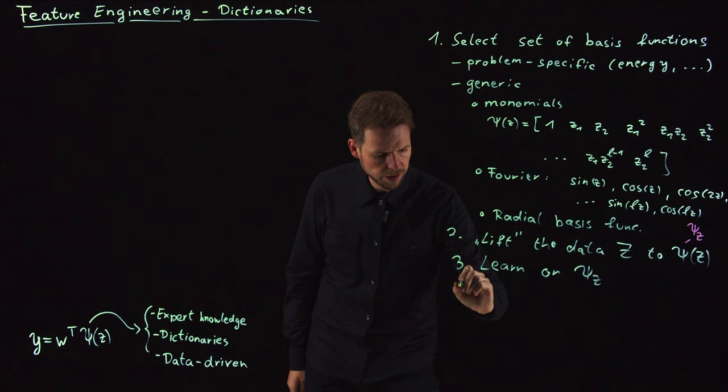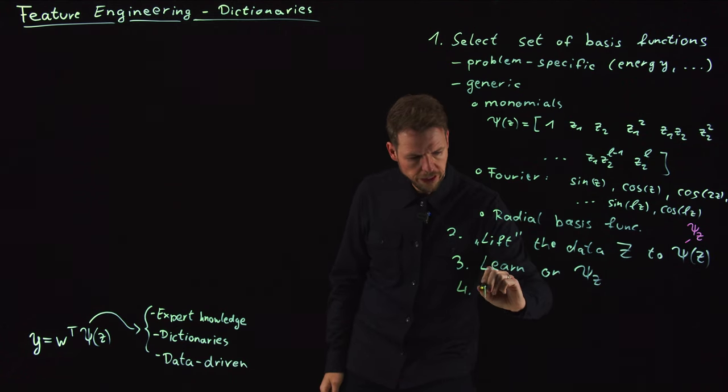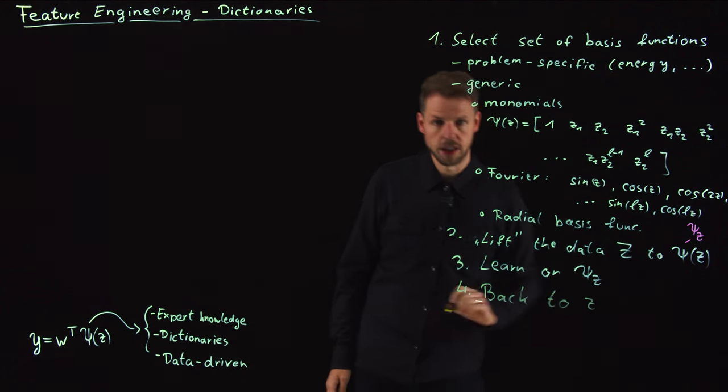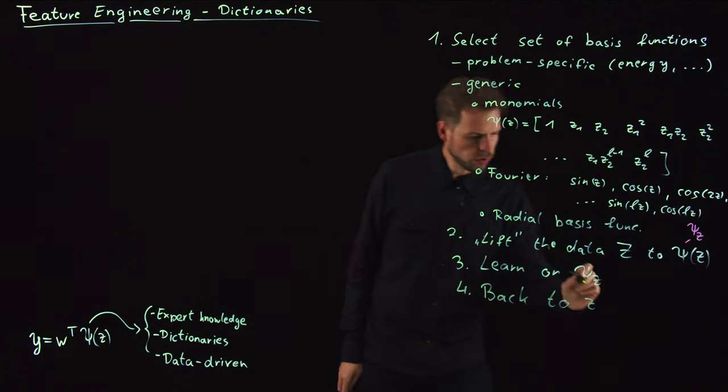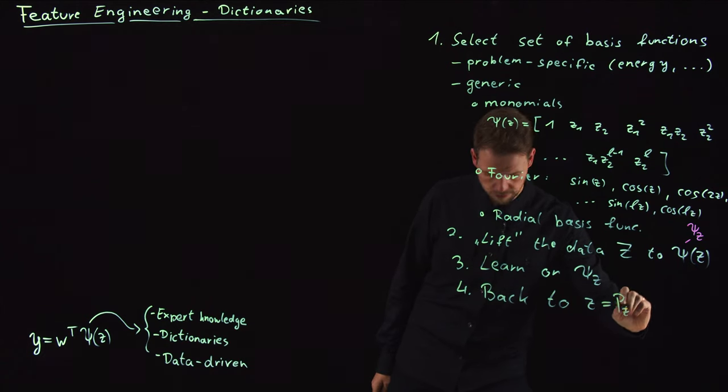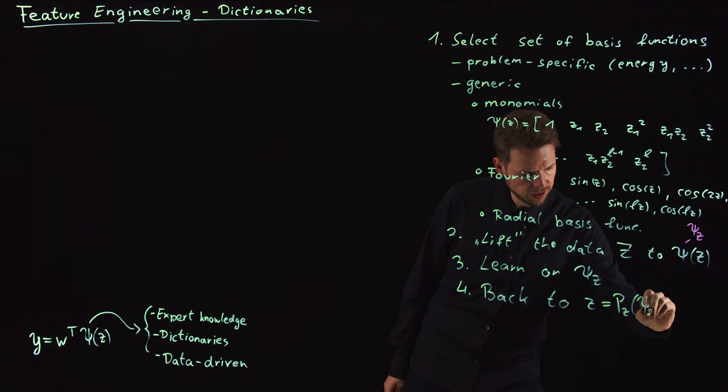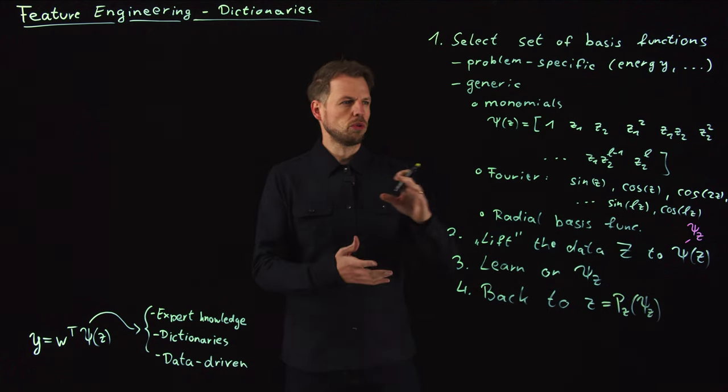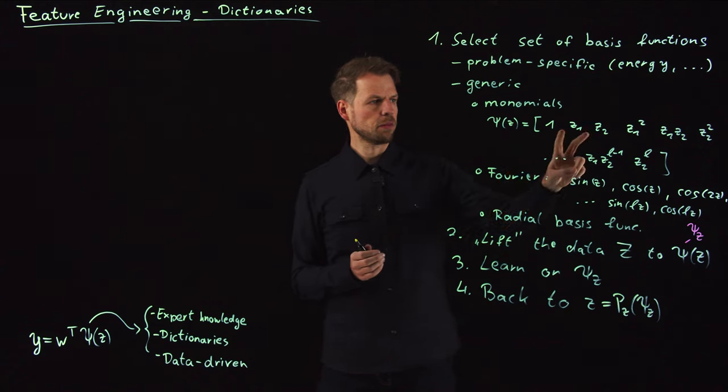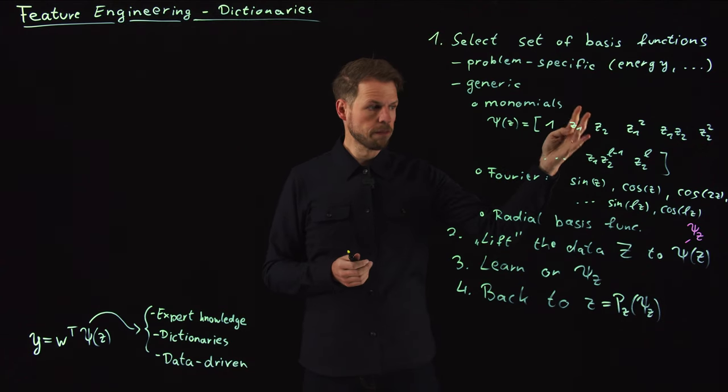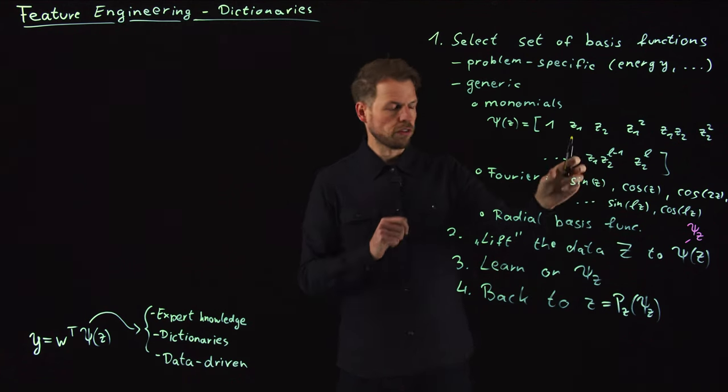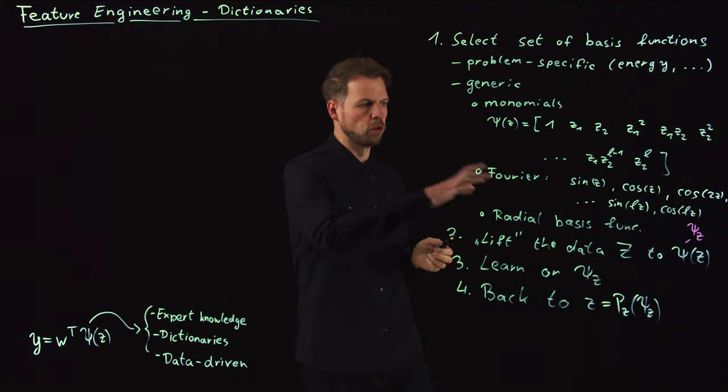And then the fourth step, and this is not always easy, is back to Z. And this may seem easy. What you do is basically something like a projection step of Psi Z, which means you have to get back from your basis expression to your original Z. For the monomials, this is easy because you just would pick these individual components, and you're done. For others, this can be more complicated because you need to take combinations of sines and cosines to get the Z1 and Z2 base. So you see this is already very challenging.